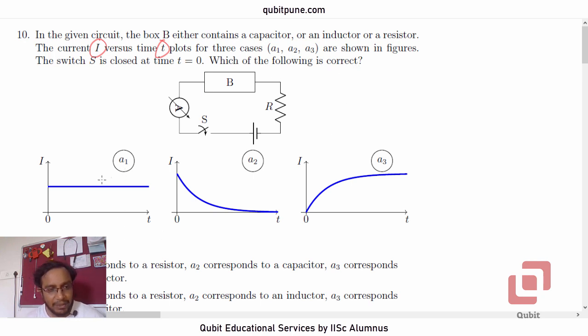In A1 we have a horizontal line for current varying with time. In A2 we can see the current decreasing with time and in A3 we can see the current increasing with time and then trying to be asymptotic with a horizontal line.